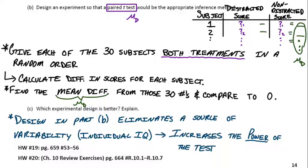So that means part B, since it's improved, actually increases the power of the test. Meaning, if there is a difference between the distracted test and the non-distracted test, the better design in part B is more likely to detect that difference.